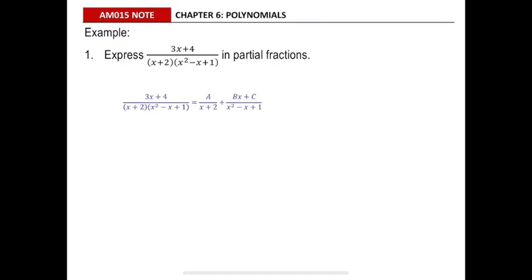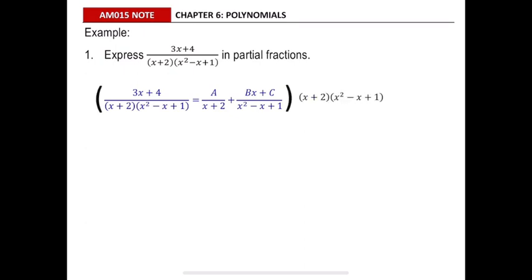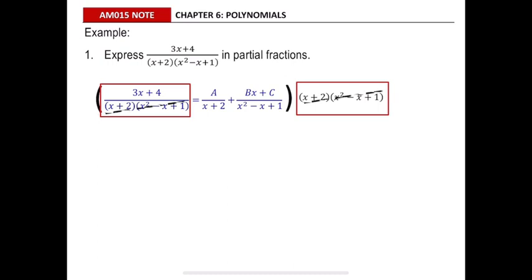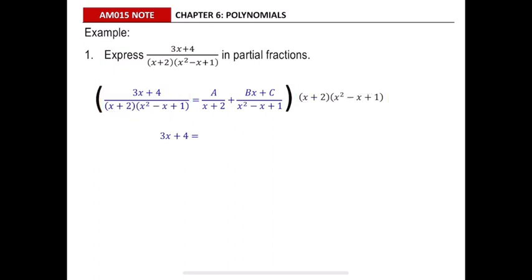To solve this, we multiply the whole equation by the denominator: x plus 2 multiplied by x squared minus x plus 1. Multiplying the left side first will cancel the denominator and leave 3x plus 4. Then multiplying the first partial fraction will cancel the denominator and leave A multiplied by x squared minus x plus 1.